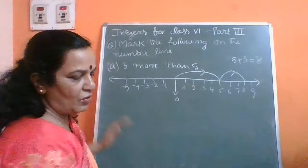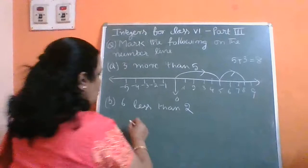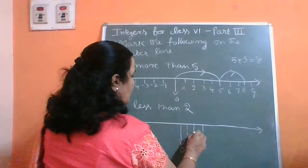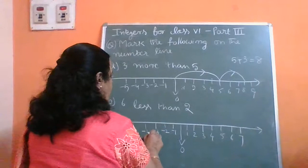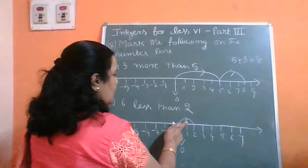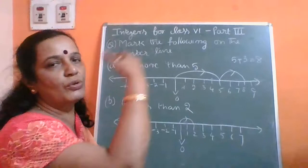The second question is: 6 less than 2. You draw a number line, marking 0, 1, 2, 3, 4, 5, 6, 7 on the right and minus 1, minus 2, minus 3, minus 4, minus 5 on the left. First you have to go to 2 — from 0 to 2 — and then come back 6 towards the left side, because it is less.